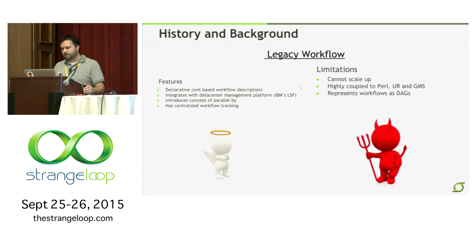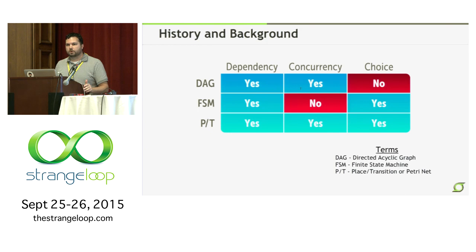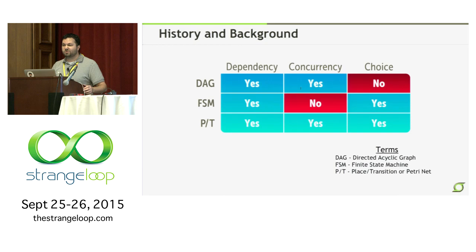Finally, legacy workflow represented all workflows just as DAGs, which is totally common within workflow engines. But often what we want to do is not just a directed acyclic graph. DAGs are great because they encode dependencies and can do concurrency really well, but they can't do choice at runtime — you have to choose everything before you encode it into the DAG. We wanted to make choices at runtime. The most common way to do that is to use a finite state machine, but FSMs can't do concurrency. And often what you end up with adopting somebody else's workflow engine that only does DAGs is a DAG of FSMs, and you've mixed your abstractions.